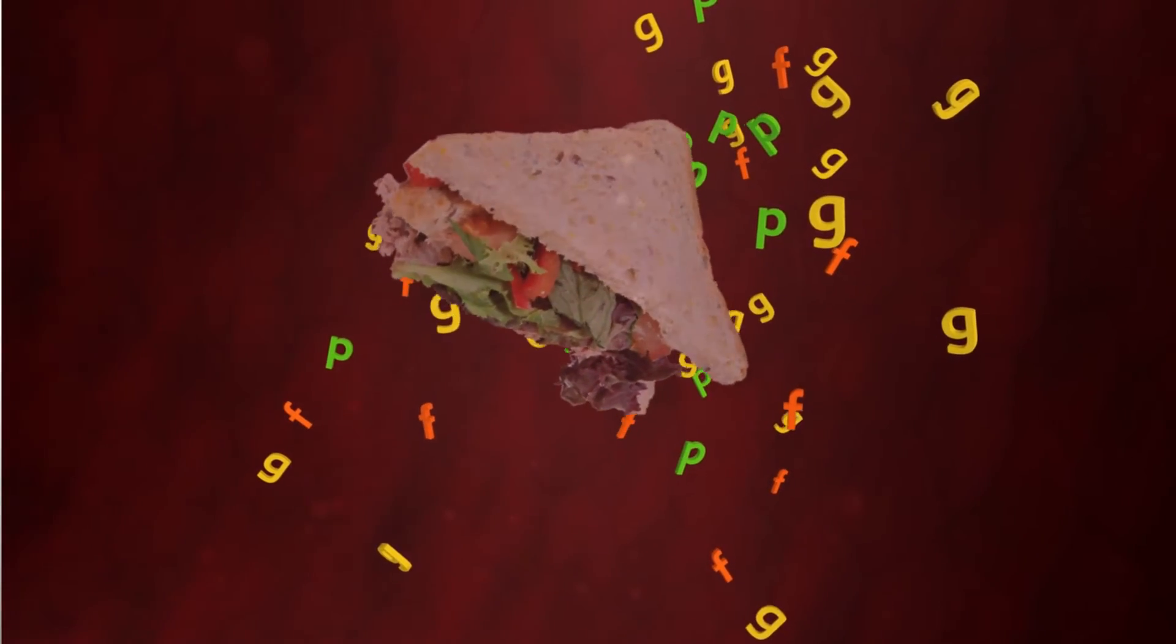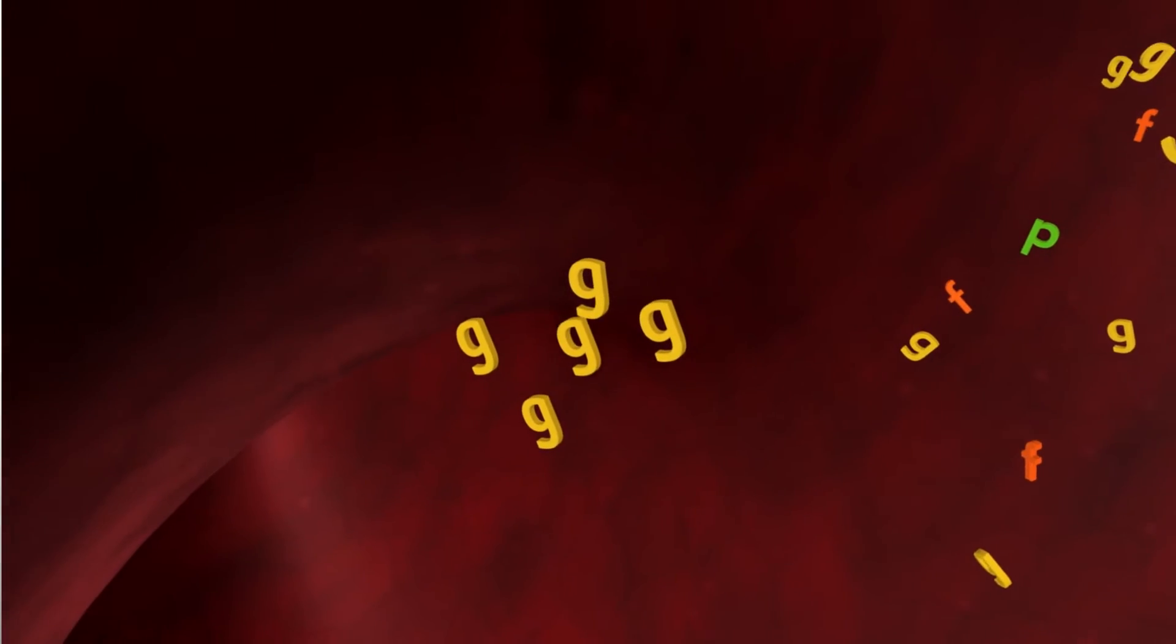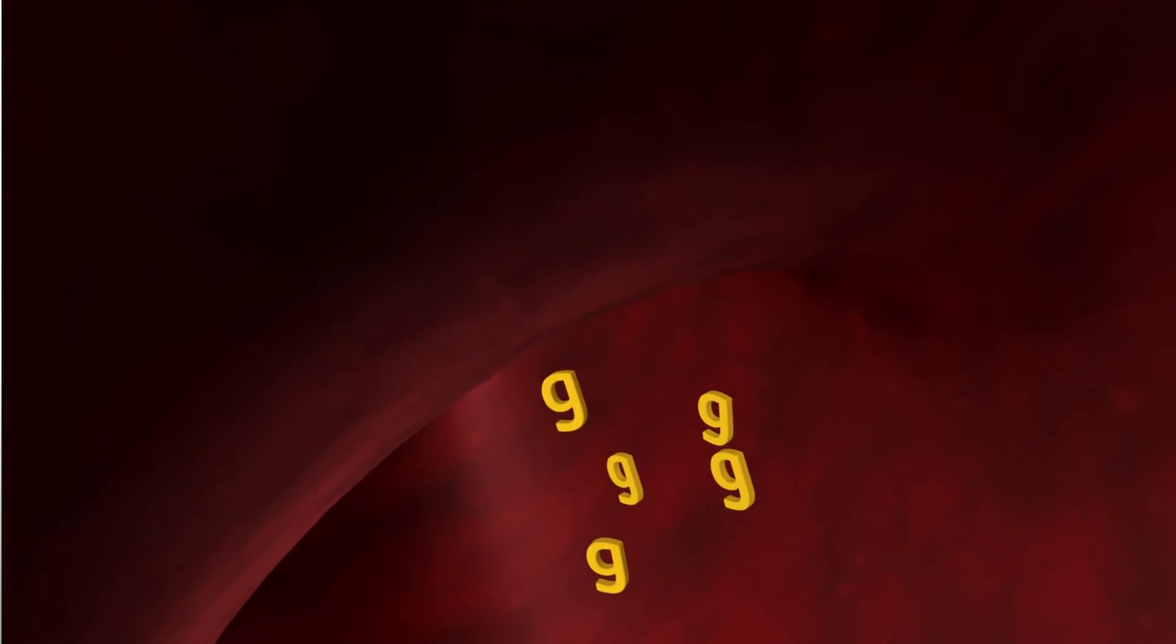Carbohydrate foods are broken down to glucose, which is transported via the blood to our tissues to be used as fuel. Glucose is the main energy source for the brain.